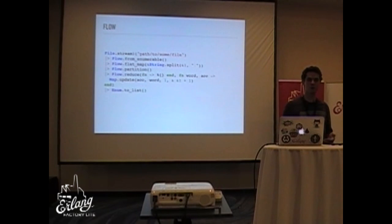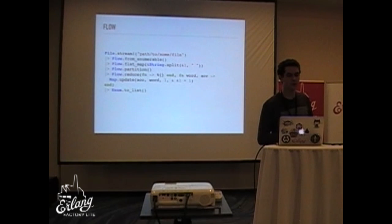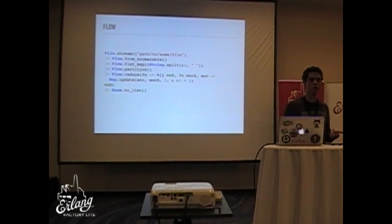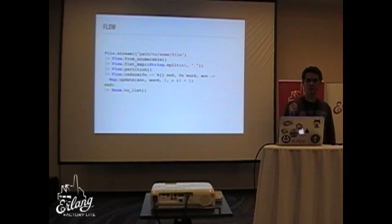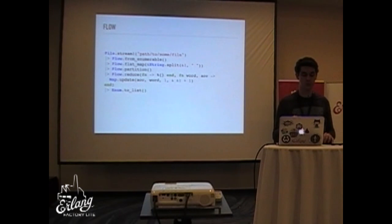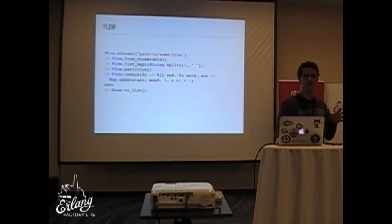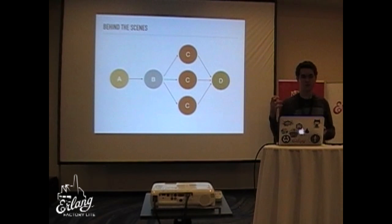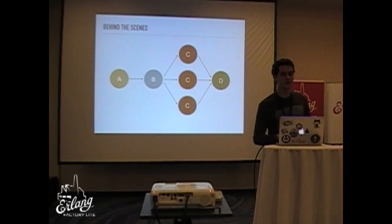You can flat map, split things by words, partition them, and then reduce. Here we're computing a word count in a very similar way. The important thing is we are still being concurrent, and no matter the size of the file it will still be efficient. Another important thing is that the work only starts when you say 'give me a list' — when you call `Enum.to_list` — that's the moment the work begins.